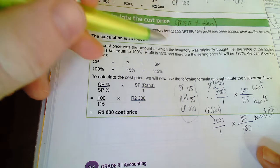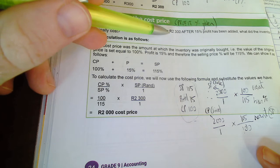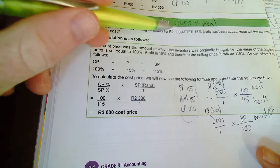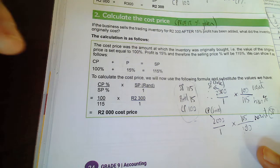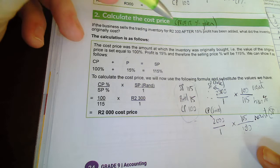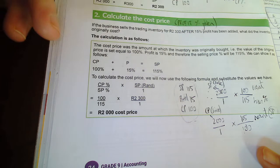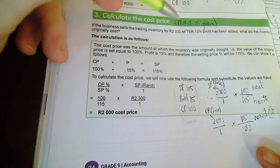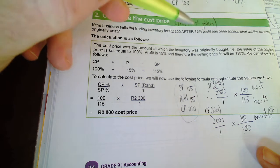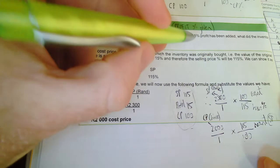Alright, so if the business tries to sell trading stock for R2300 after they added a 15% profit margin, what did it cost originally? Again, so we start with the percentages that we write down on the left-hand side.